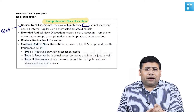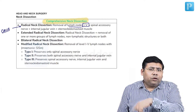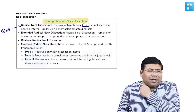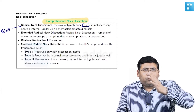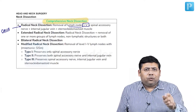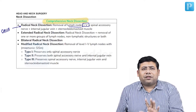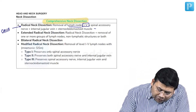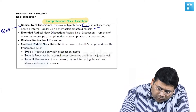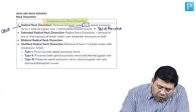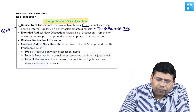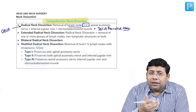Why is it known as radical? Because not only are you removing these structures, but the spinal accessory nerve — which passes through level 2 and divides it into 2a and 2b — is also removed rather than retracted. That is why it is known as radical. Along with that, you also remove the tail part of the parotid and the submandibular gland.